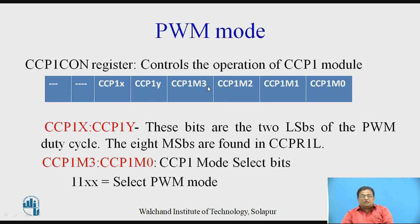The lower 4 bits of CCP1CON are the mode select bits, CCP1M3 to CCP1M0. To operate the CCP1 module in PWM mode, set CCP1M3 and CCP1M2 to 1. When these bits are both 1, the bits M1 and M0 (XX) can be either 1 or 0 — it doesn't matter. If CCP1M3 and CCP1M2 are both 1, it selects the PWM mode.